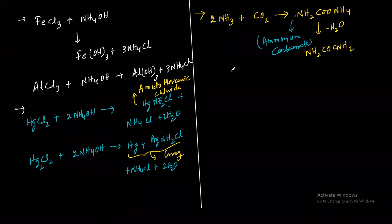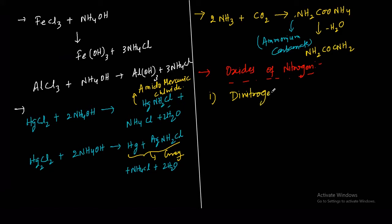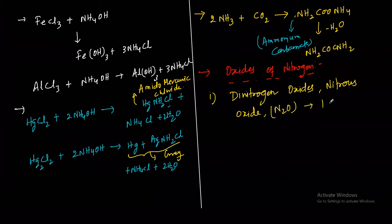Next, write down: oxides of nitrogen. Nitrogen forms a number of oxides. The first one we discuss is dinitrogen oxide, also called nitrous oxide. Its formula is N2O, and it is also called laughing gas.